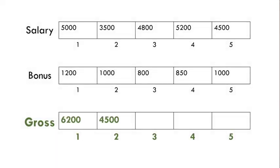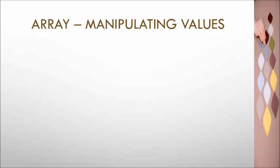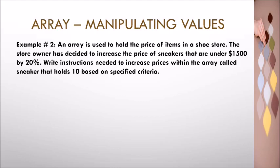The illustration shows that with each iteration, the sum generated will be stored at the appropriate location within the gross array. Once the total number of iterations is achieved, the gross array will have the amount stored for each employee. The solution then ends with the use of the keyword 'end for'.